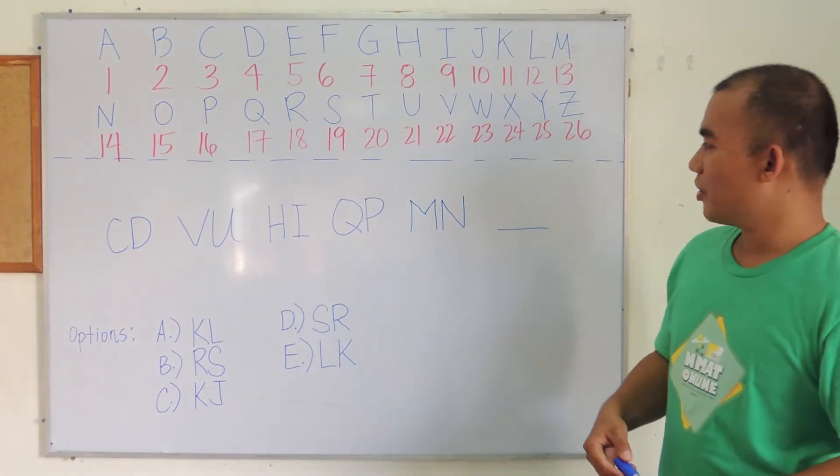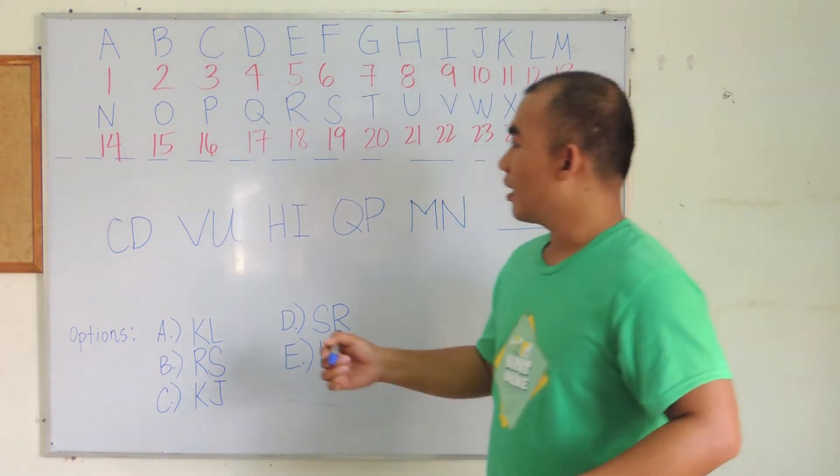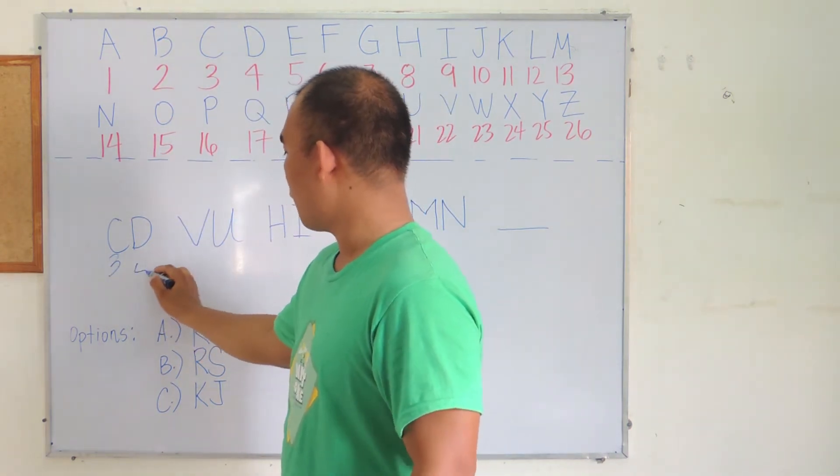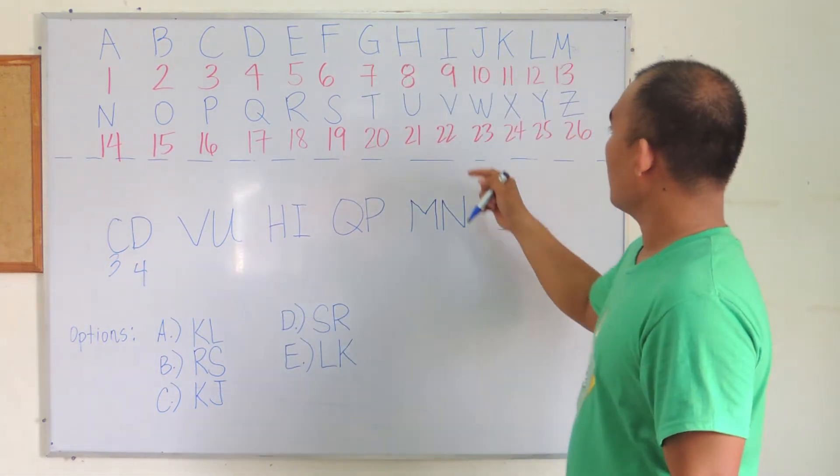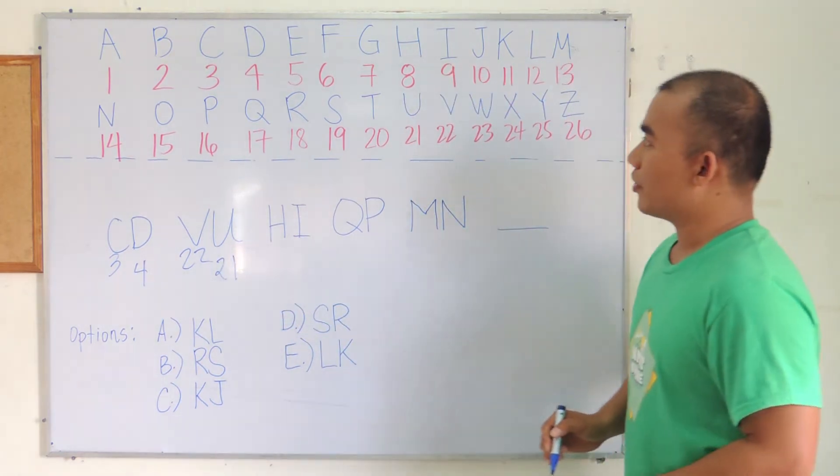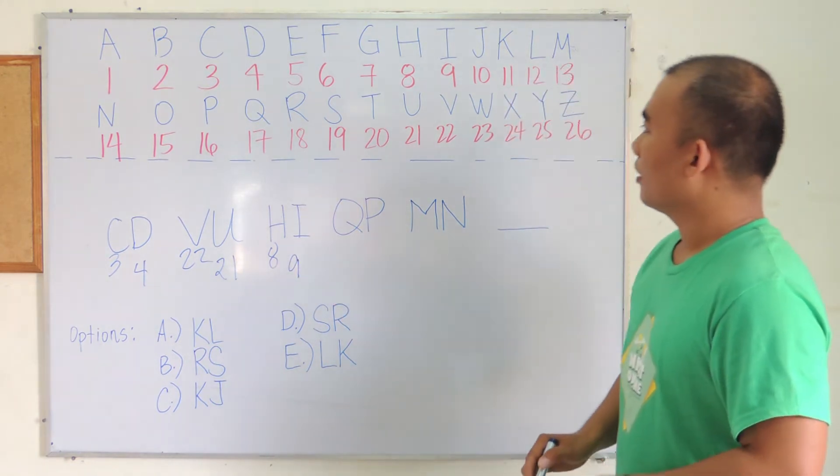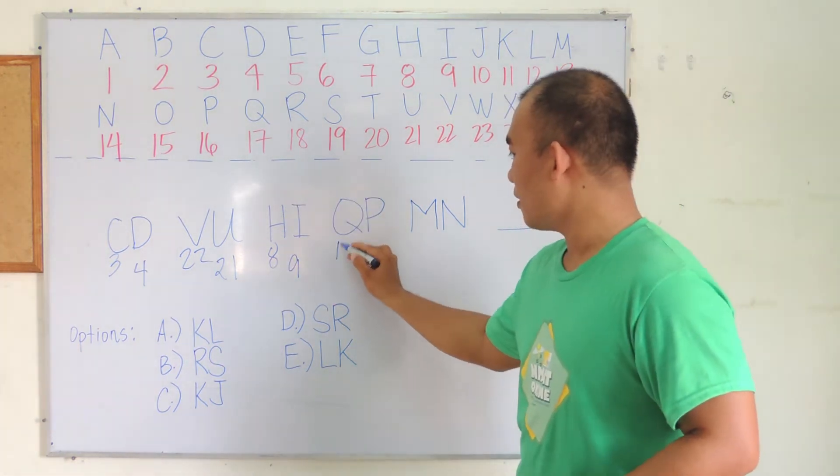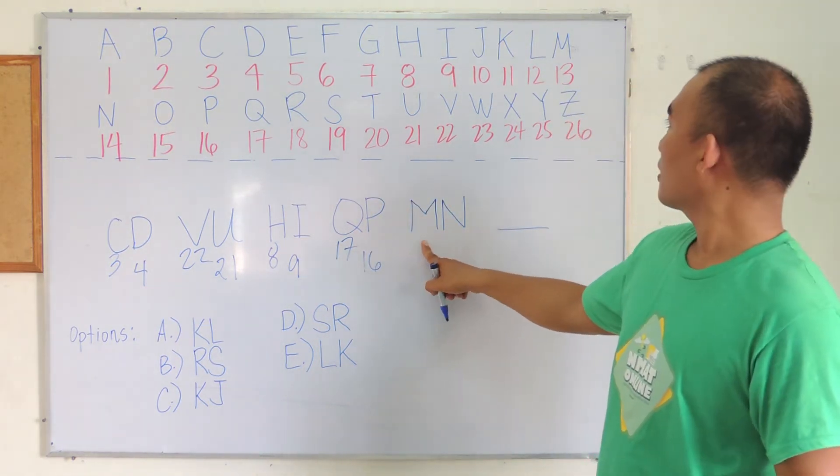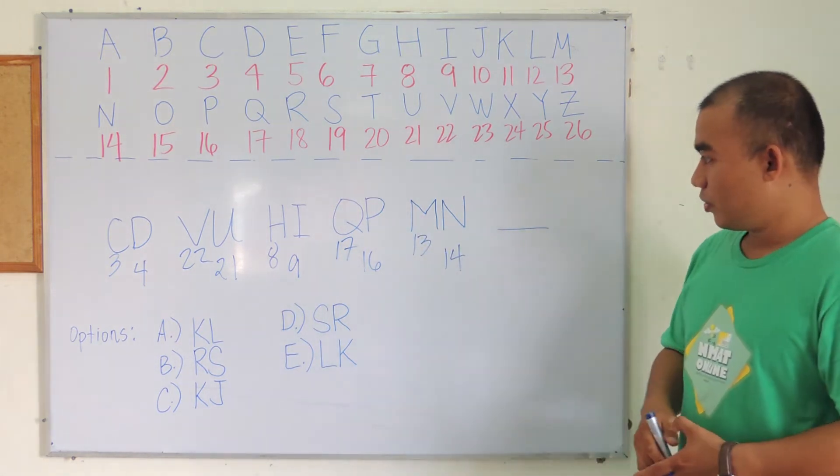We have a double letter series. The strategy is to convert these letters to numbers. We have our first letter C is 3, D is 4, V is 22, W is 21, H is 8, I is 9, Q is 17, P is 16, M is 13, and N is 14.